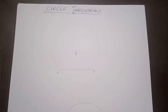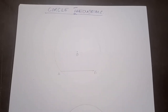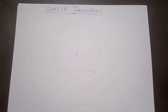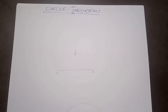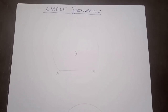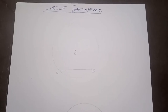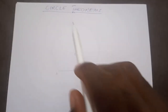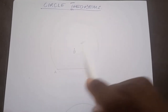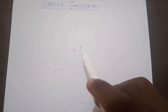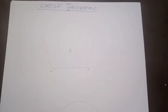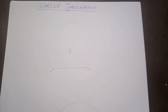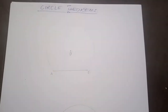Before we start this topic, there are some basic things I think we need to know about circles to help us understand the actual topics very well. So this is how a circle looks like. A circle is basically any plane shape that has equal distance from the center to any part of its circumference.